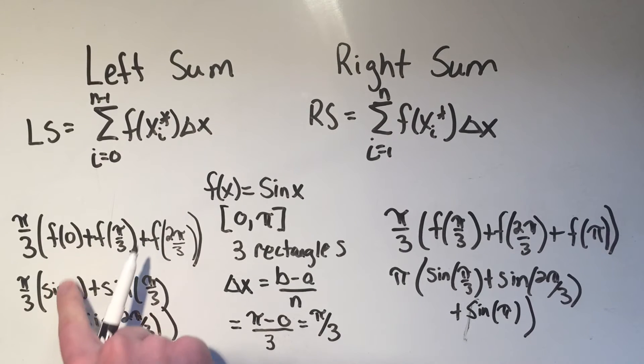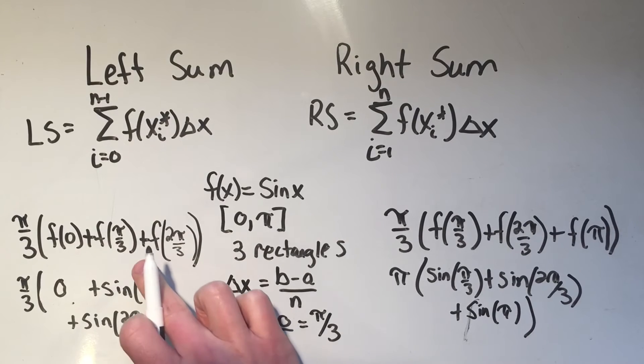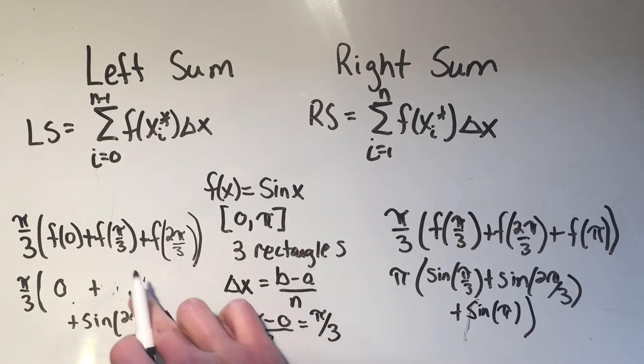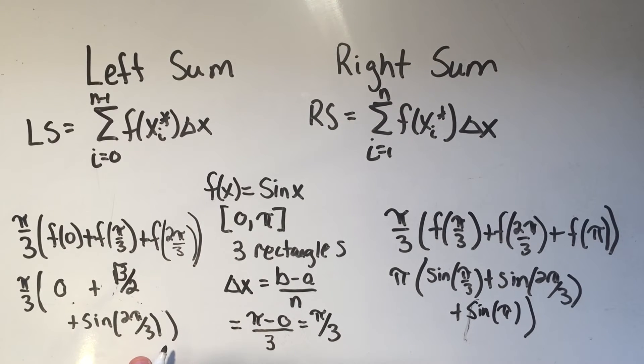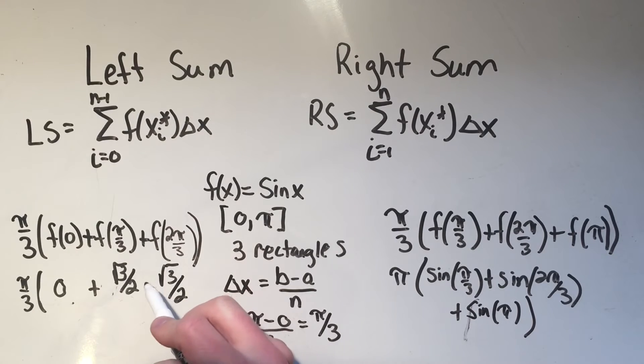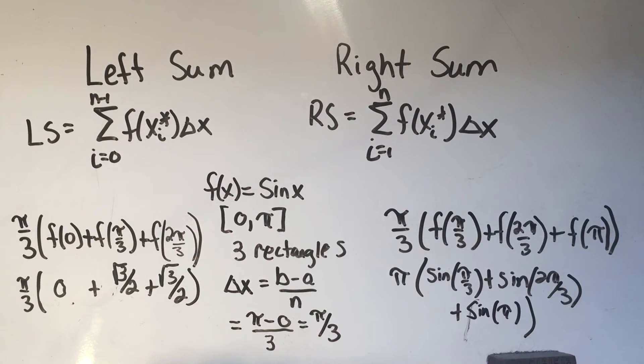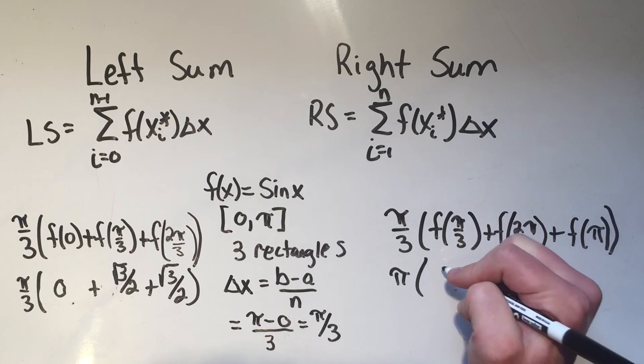Sine of zero is zero. Sine of pi over three, I think sine of pi over three, that's going to be root three over two. And sine of two pi over three, I think that's also root three over two. Over here, very similar. Sine of pi is zero, I'm not going to bother writing that. And I've got the exact same thing, sine of pi over three and sine of two pi over three, both of those values are square root three over two.